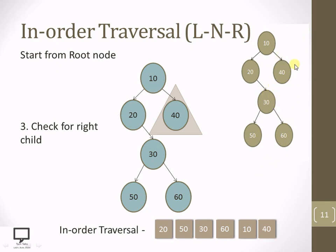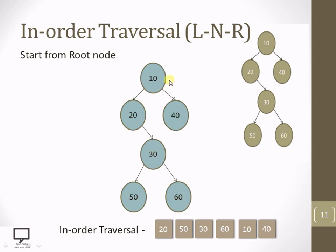Here you can see that 40 is a leaf node again. 40 is not having any right child. So what we need to do? We need to stop at this position. Here you can see that the color of every node is changed, which means we have done with the in-order traversal of the given tree. And the in-order traversal is: 20, 50, 30, 60, 10, 40.